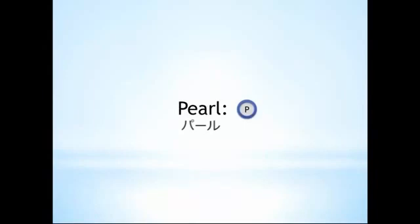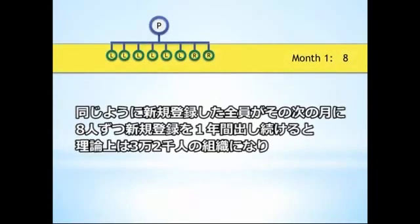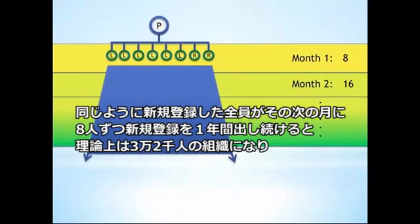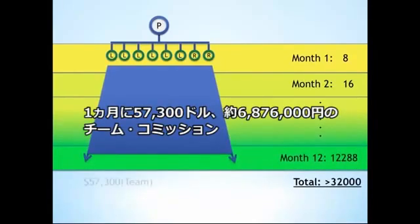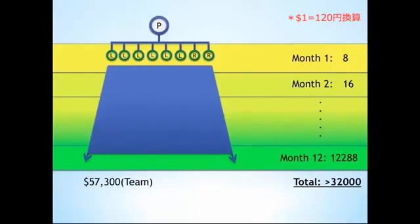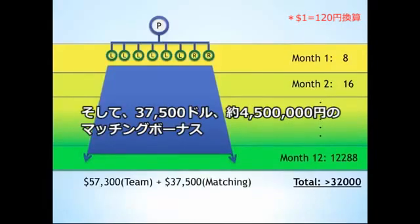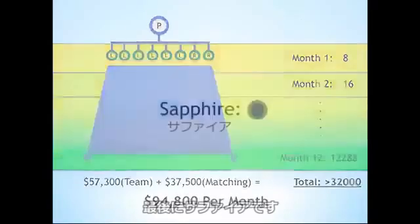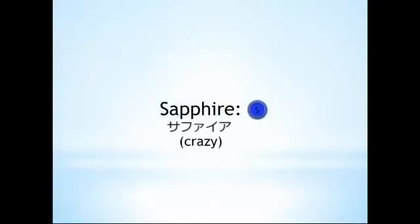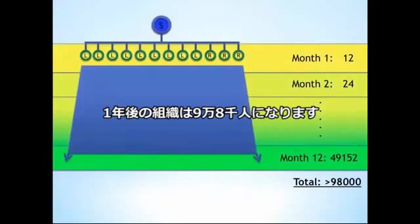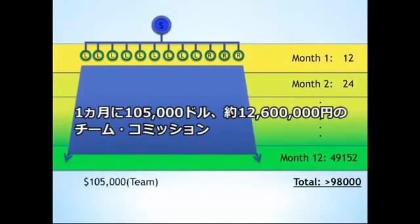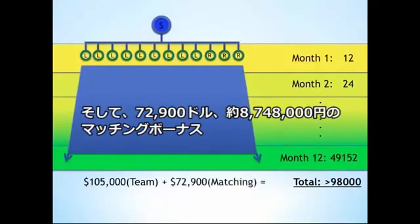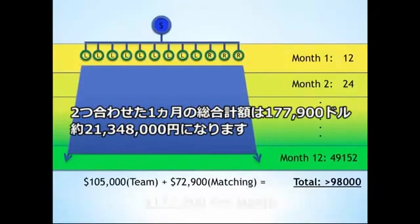At Pearl, if you put two on one side and six on the other with the same pattern repeated, your organization would consist of over 32,000 people. You'd earn a team commission check of $57,300 with matching bonuses of over $37,500 monthly — a total of over $94,800. At Sapphire, your organization would have over 98,000 people. You'd be easily hitting the maximum team commissions of $26,250 a week, and when you add in matching bonuses of over $72,900, you've got an income of over $177,900 per month.